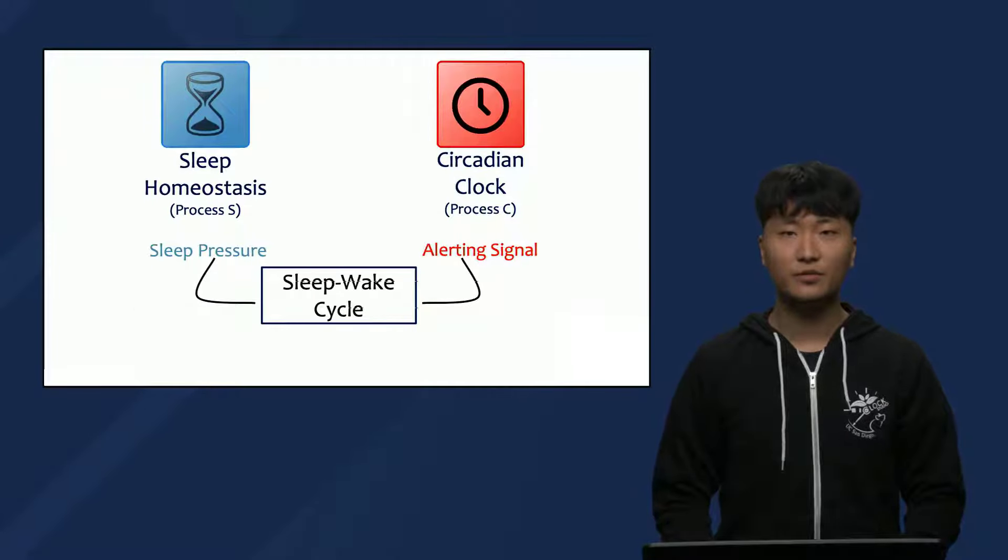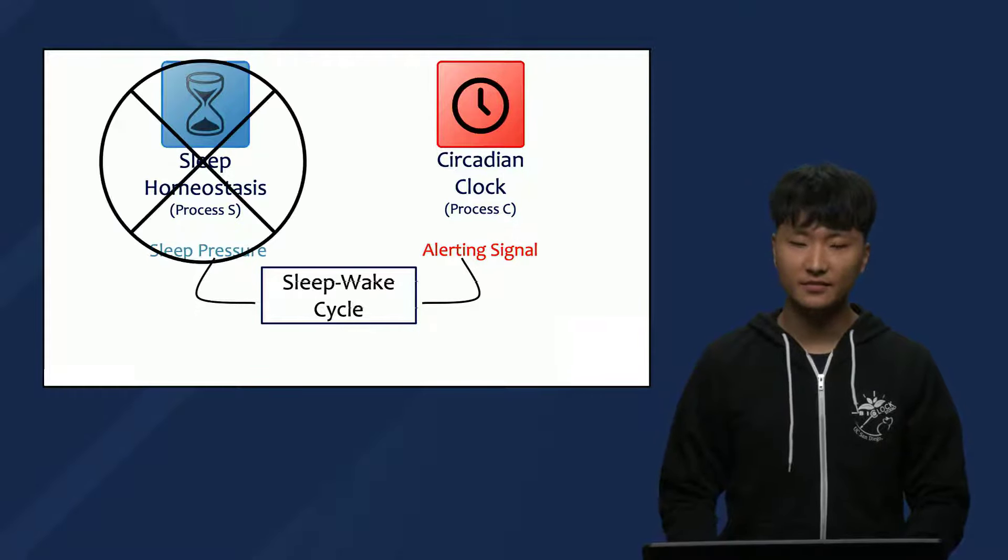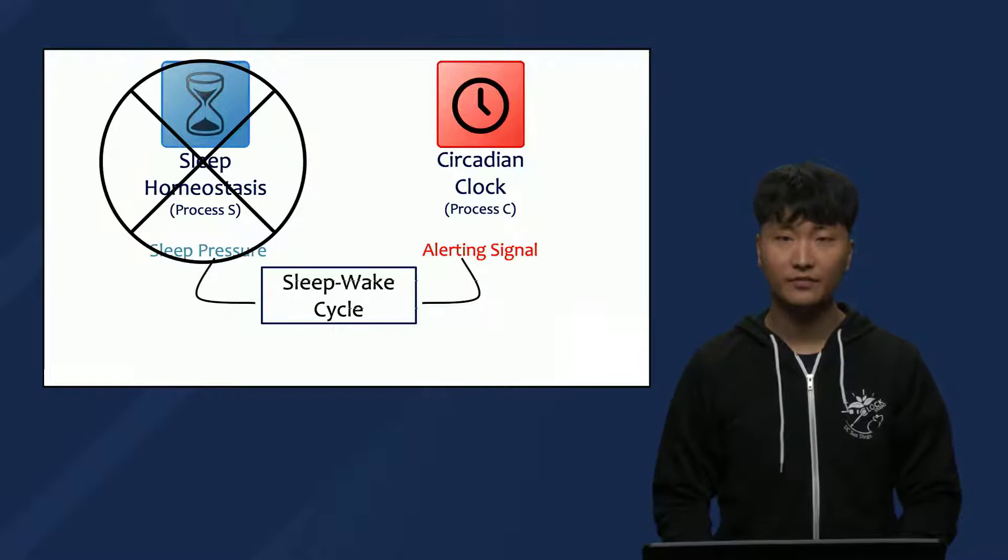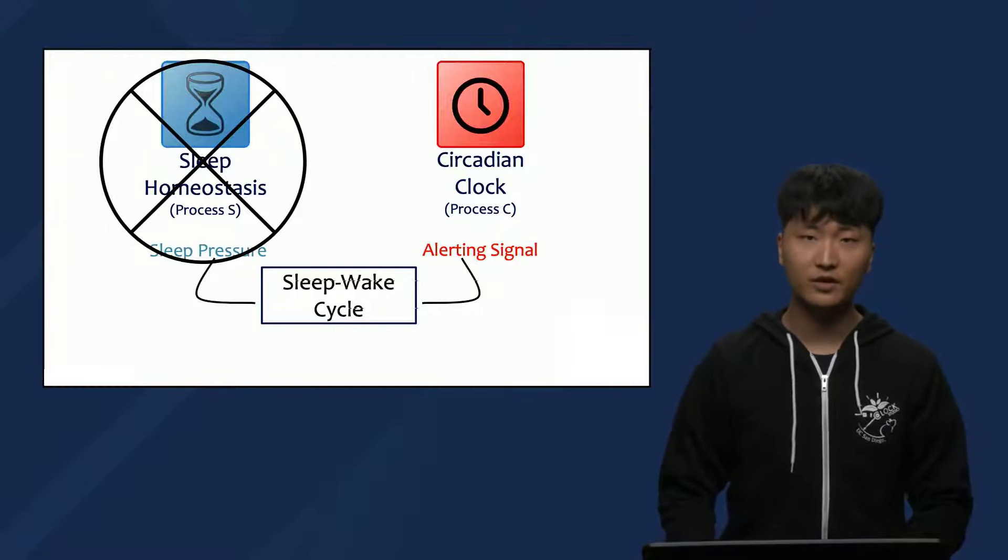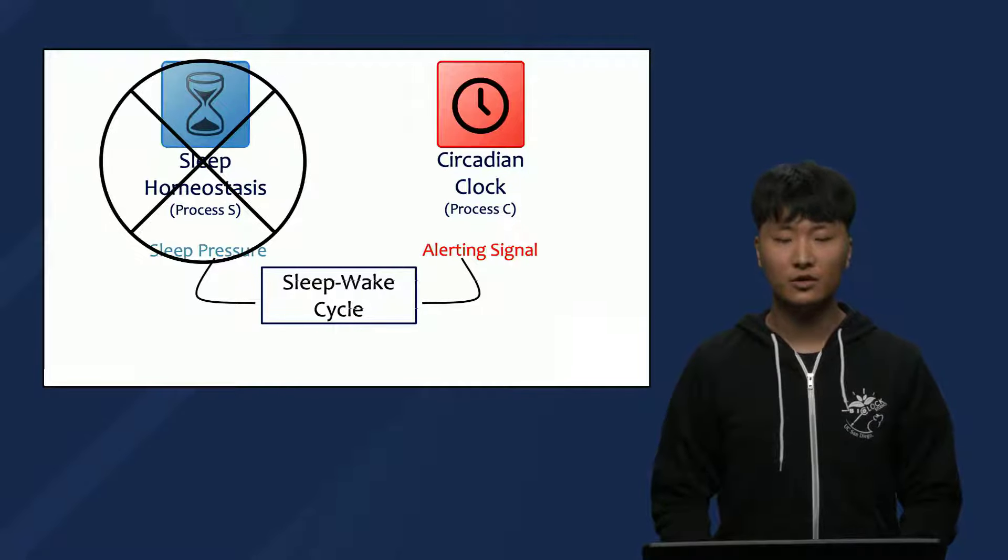Dr. Lavis' Ultra-Short Experimental Protocol was designed to eliminate sleep pressure, process S, so the timing and the amount of sleep individuals got reflected process C only. Although he conducted three slightly different experiments with a similar protocol, we will be focusing on just one.